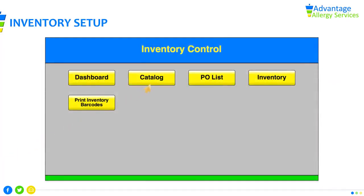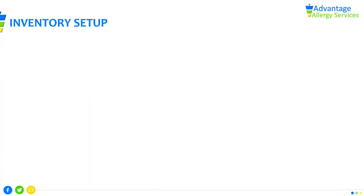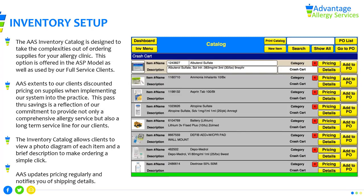Select the Catalog tab to make purchase requests. The AAS Inventory Catalog is designed to take the complexities out of ordering supplies for your allergy clinic. This option is offered in the ASP model as well as used by our full-service clients. AAS extends to our clients discounted pricing on supplies when implementing our system, and this pass-through savings reflects our commitment to provide a comprehensive allergy service and a long-term service line for our clients.